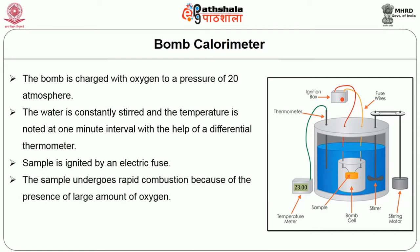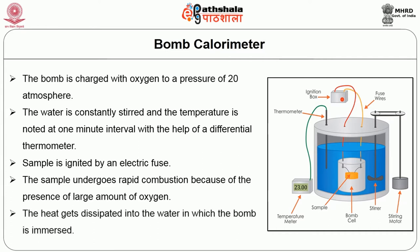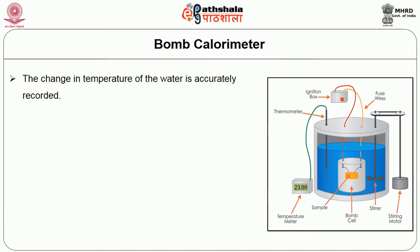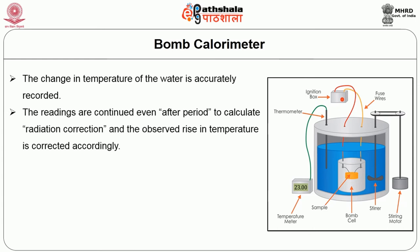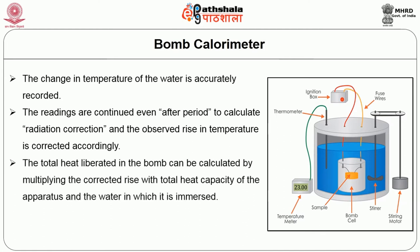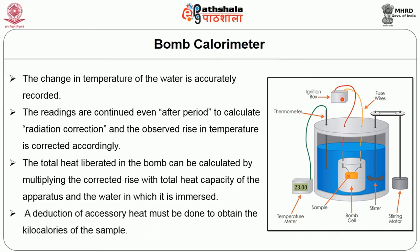The sample undergoes rapid combustion because of the large amount of oxygen present. The heat gets dissipated into the water in which the bomb is immersed, and the change in temperature of the water is accurately recorded. Readings are continued to calculate radiation correction, and the observed rise in temperature is corrected accordingly. The total heat liberated is calculated by multiplying the corrected rise with the total heat capacity of the apparatus and water, then a deduction of accessory heat is done to obtain kilocalories of the sample.